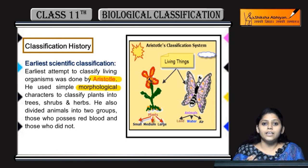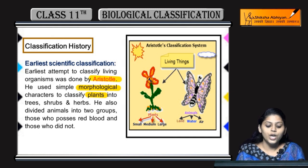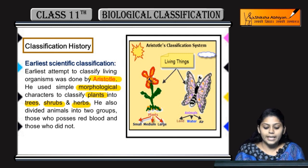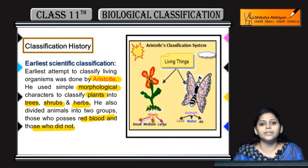Further, unhone kuch morphological characteristics ki basis pe plants ko sub-classify kiya into trees, shrubs, and herbs — depending upon their sizes: tall, medium, and short. Similarly, unhone animals ko classify kiya based on whether they possess red blood or not, and the habitat they live in.